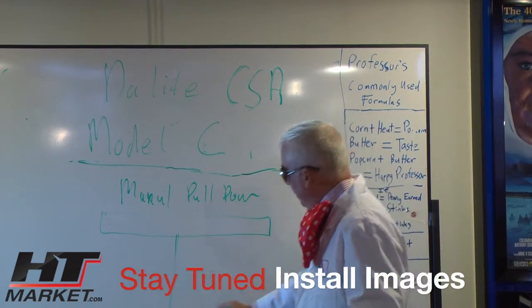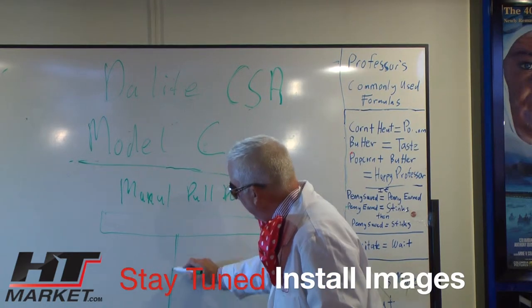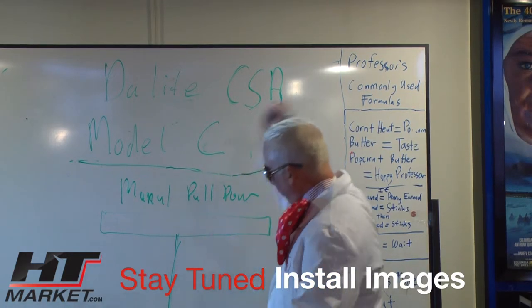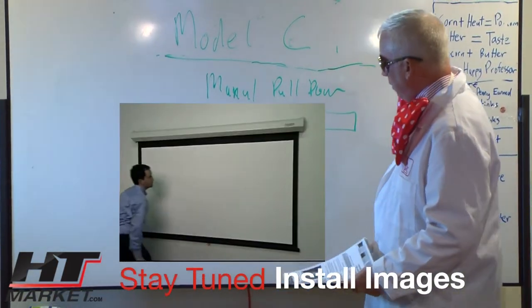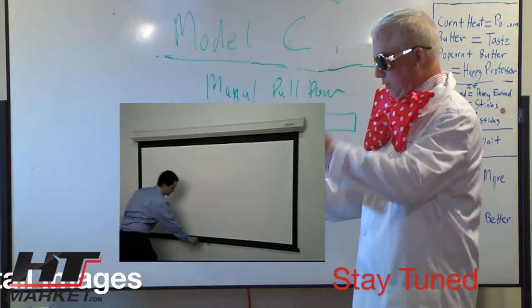What does that mean? That means this can come up in a controlled fashion versus going like this and going flying up. In the case it goes up very slowly and quietly. I wish my wife was like that.